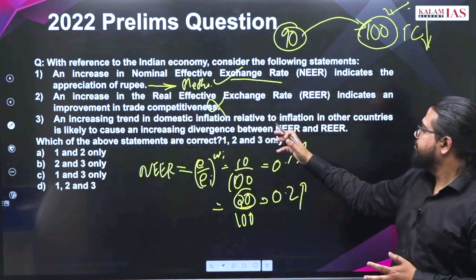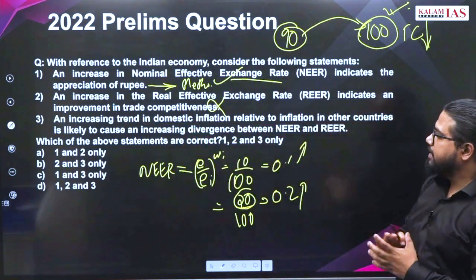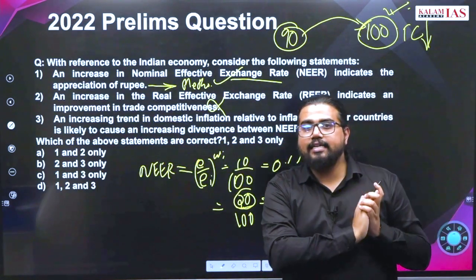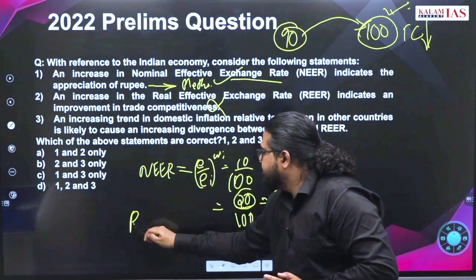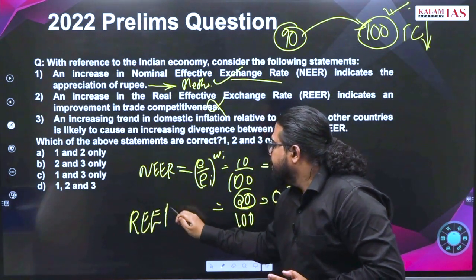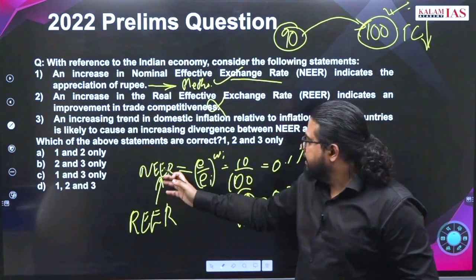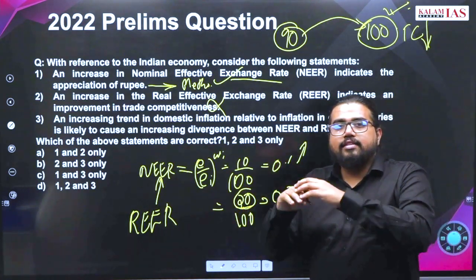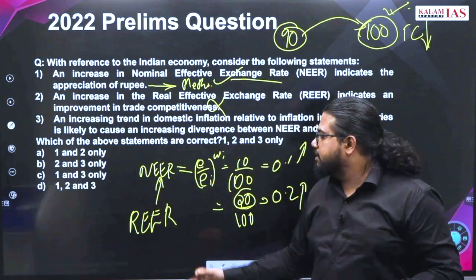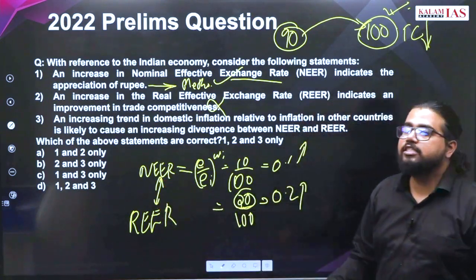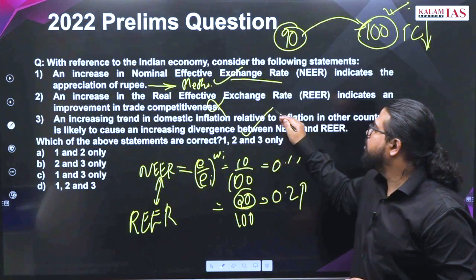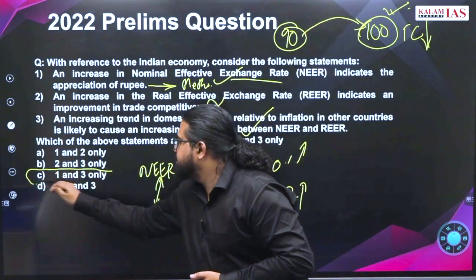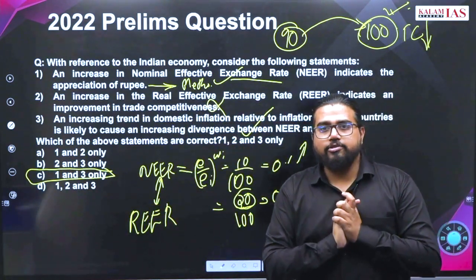An increasing trend in domestic inflation relative to inflation in other countries is likely to cause an increasing divergence between NEER and REER. That is exactly correct, because REER is technically nothing but inflation-adjusted NEER — you add the inflation elements into it and you get REER. The higher the divergence between inflation in two countries, the higher the divergence between NEER and REER. This is an absolutely correct statement. So the answer is: statement 2 is wrong, and the answer is C — 1 and 3 only. That is all for now, thank you.